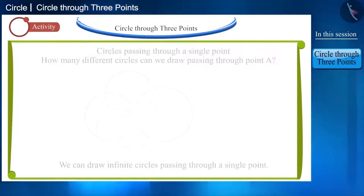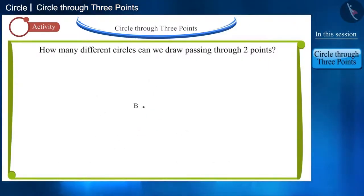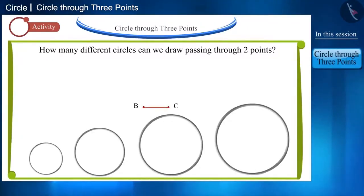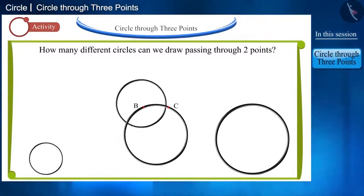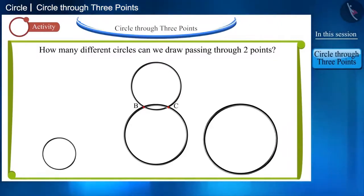Instead of one point, if we take two points, point B and point C, then how many circles can you draw passing through them? You can place the rings of different sizes in this manner, keeping in mind the distance between two points. You can also place the rings in this way.